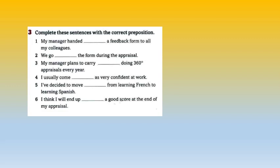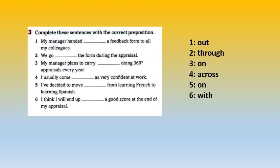Another exercise: what are the prepositions used with these phrasal verbs? Stop the video, do it, then check your answers. The preposition with 'hand' is out — handed out. We go through the form — that means we look at the details. My manager plans to carry on — continue. I usually come across or come over — both are correct — meaning I seem or appear. I've decided to move on — change, stop doing something and start something else. I think I will end up with — this is the final result.